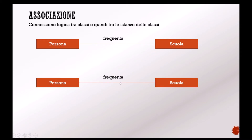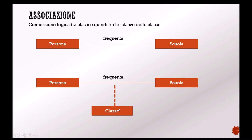Sometimes it happens that within a relationship between two classes, a third class enters to specify some arguments. For example, the person attends the school within a certain class. The relationship is the same, only a third object — a third class — is introduced, in this case called 'classe' (class), which is indicated with a dashed line and is called an association class.